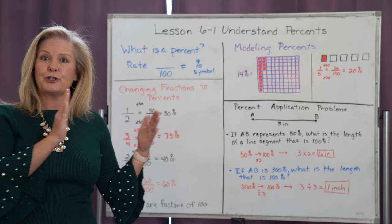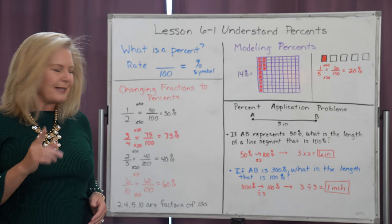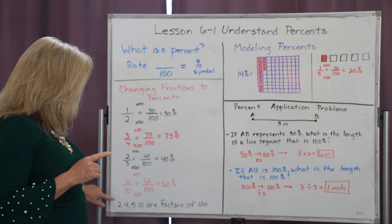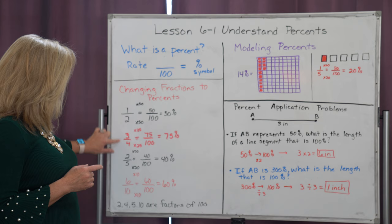Now some fractions are easier than others. The best fractions that we can change from fraction to percent form are those fractions whose denominators are factors of a hundred. So two, four, five, and ten are all factors of a hundred.